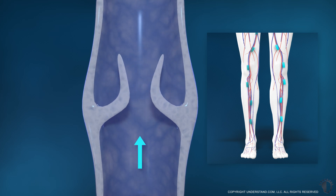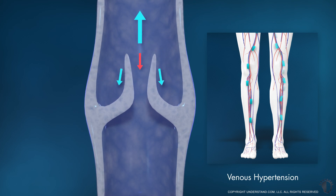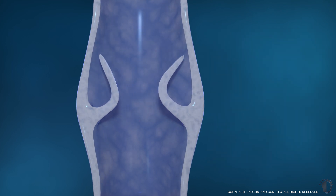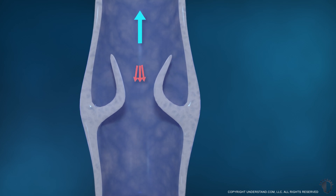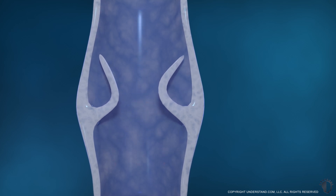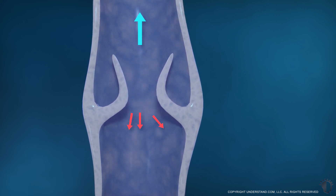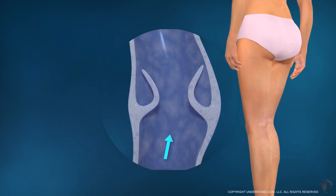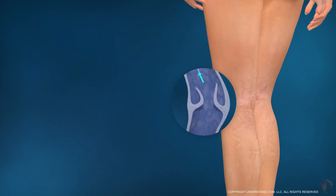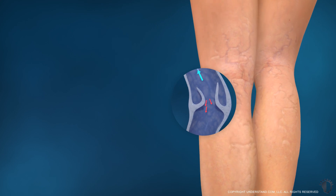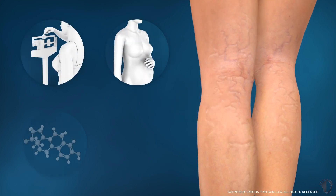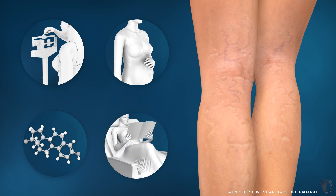This pressure, known as venous hypertension, can cause the valves in the veins of the legs to weaken and leak blood backward, which exerts pressure on the walls of the affected veins, causing them to stretch and twist. This results in the formation of varicose or spider veins. Factors such as obesity, pregnancy, hormonal changes, and prolonged sitting or standing can increase the risk of varicose and spider veins.